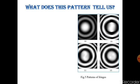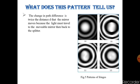Patterns of the fringes: What does this pattern tell us? The change in the path difference is twice the distance d the mirror moves, because the light must travel to the movable mirror then back to the splitter.